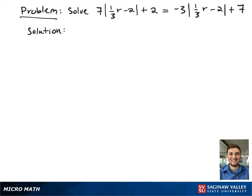Here we have the absolute value equation: 7 times the absolute value of one-third r minus 2, plus 2, equals negative 3 times the absolute value of one-third r minus 2, plus 7.